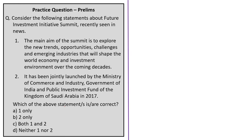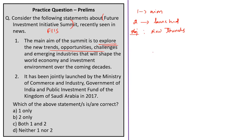The next question is with reference to the Future Investment Initiative Summit, with two statements. The first statement about the main objective of the summit — to explore new trends, opportunities, challenges and emerging industries shaping the economy over coming decades — is correct. The second statement is incorrect because this initiative was launched by the Public Investment Fund of Saudi Arabia alone in 2017, not jointly with the Ministry of Commerce and Industry of India. The summit is also called Davos in the Desert.